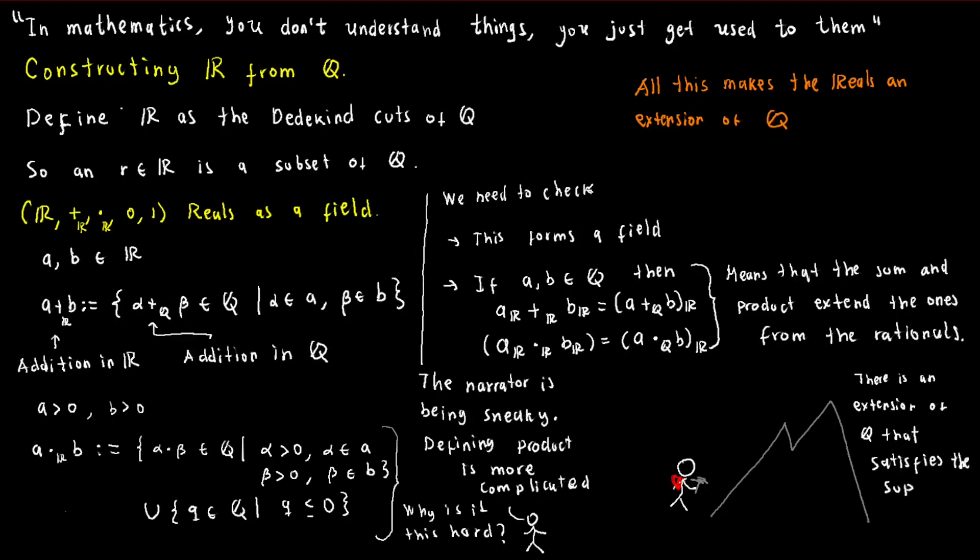While constructing the real numbers may seem as daunting as climbing Mount Everest with a backpack full of rocks, taking the time to verify all the details is essential. But do not worry, the view from the summit is worth it. The result is a remarkable theorem. There exists an ordered field that extends the rational numbers and satisfies the least upper bound property. And believe it or not, from this seemingly dry and boring theorem springs forth the entire wondrous world of calculus. So strap on your boots, pack your bags, and let's get climbing.